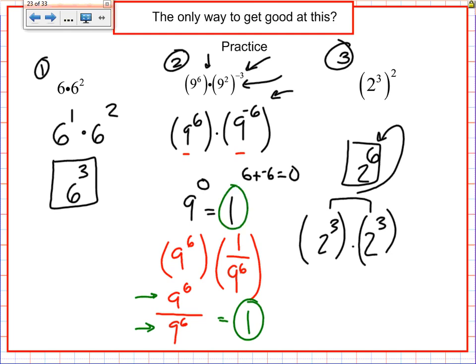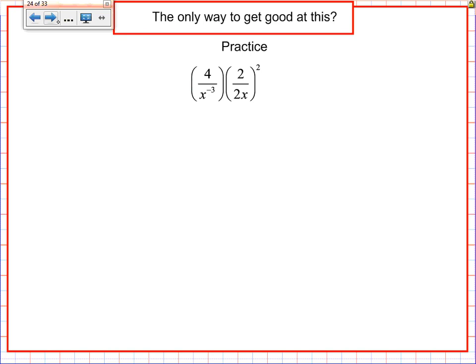All right. Last problem here. This is problem number four on your worksheet. A lot of stuff going on. First of all, work inside your parentheses. Work inside of your parentheses before you do anything else. I'm going to start with the more obvious of the two. I have a two in the numerator and the two in the denominator of that fraction. Let's reduce that to one over x. It's always okay to reduce a fraction.